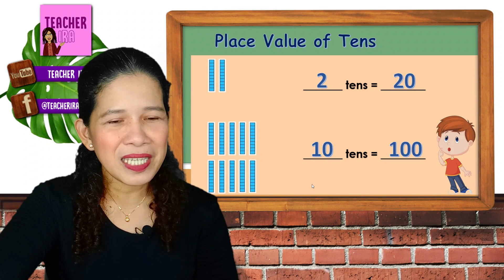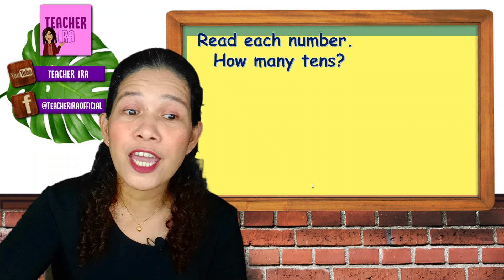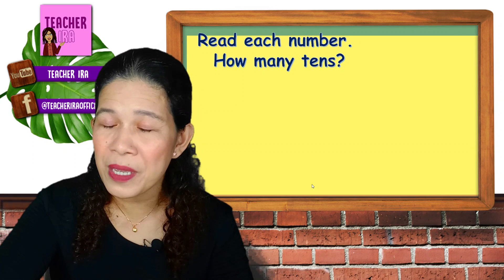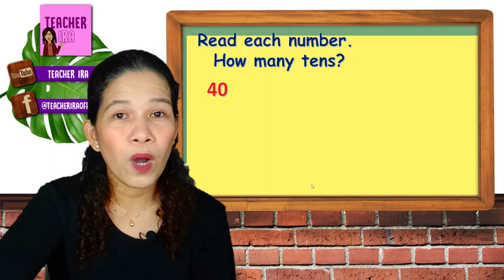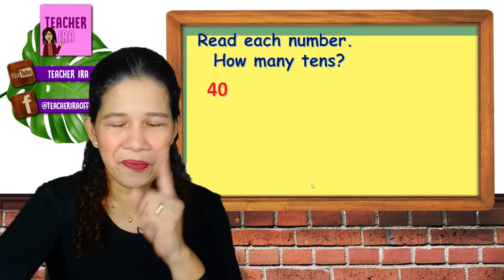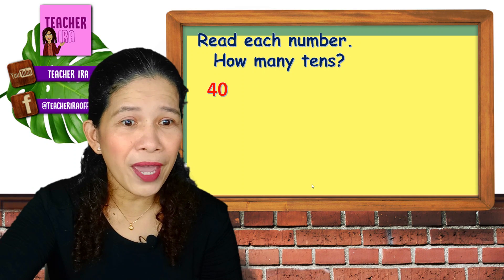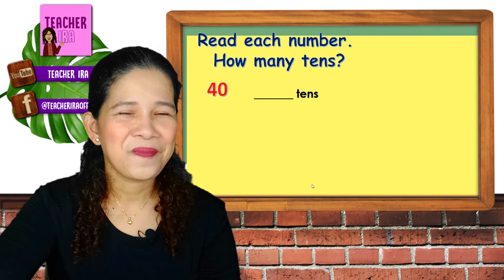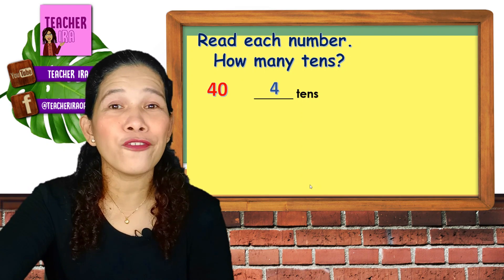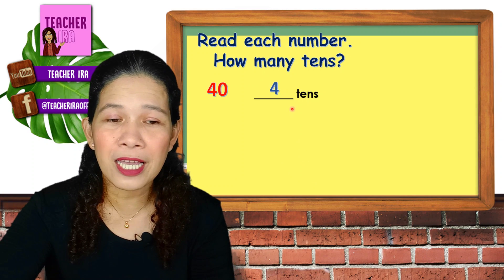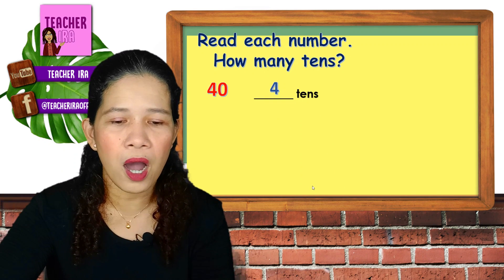Now let me see if you really understood the lesson. Read each number and tell me how many tens there are. What is that number? Correct, that's 40. When you have 40, how many tens are there? Yes, that's 4. You got 4 tens — that's why you have 40, meaning there are 4 tens and 0 ones, there are no ones. How about this number? Yes, this is number 80. How many tens are there in 80? That's eight tens.